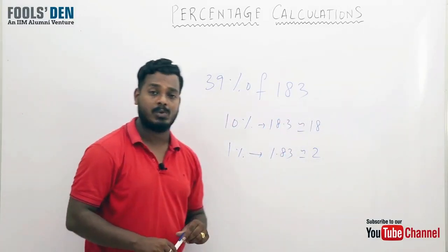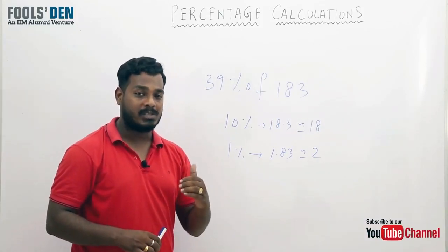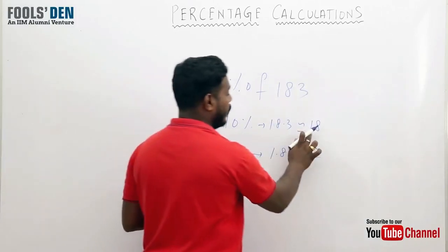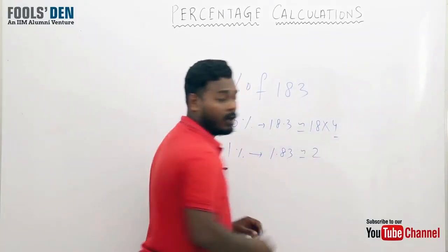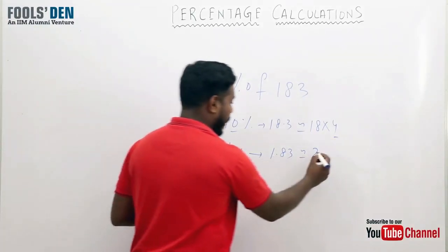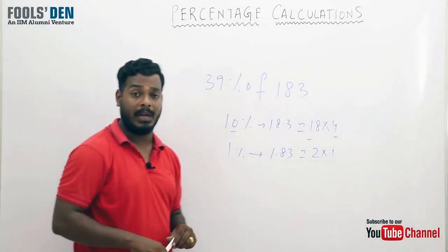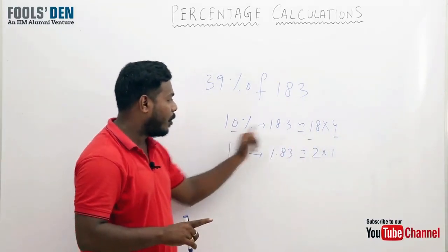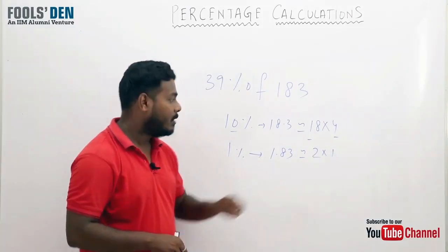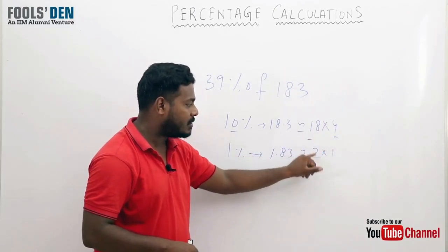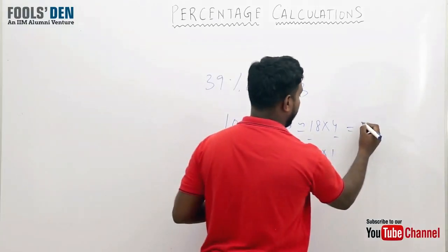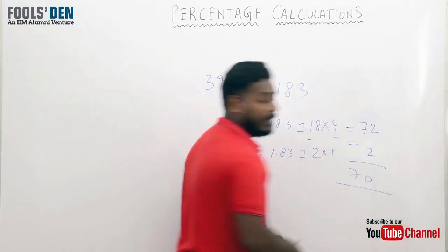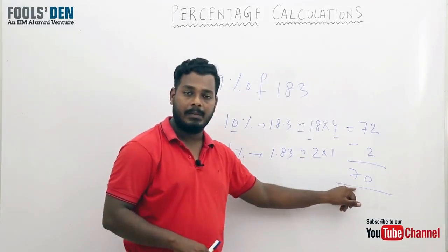Now for 39 percent, what's the easiest way? Think - what's the easiest way to reach 39? 39 is close to 40, so can we do it like 40 minus 1 equals 39? See, I'm going to do the same. I have the 10 percent value, I'll take it 4 times because 10 fours are 40, so that's 40 percent. And I'll take 1 percent once and subtract, because 40 minus 1 becomes 39. This is 40 percent, this is 1 percent, 40 minus 1 would be 39 percent. So 18 times 4 is 72, minus 2 times 1 is 2, which becomes 70. So the approximate value is 70.